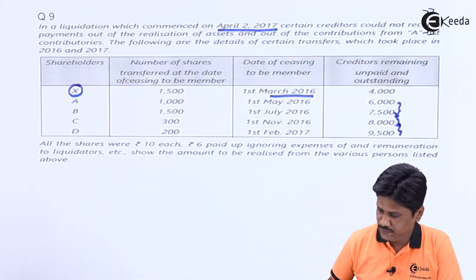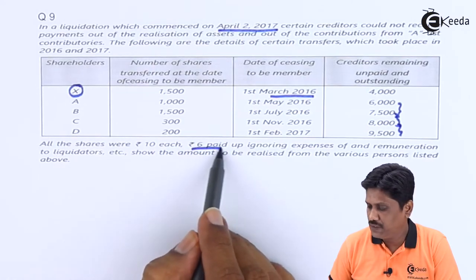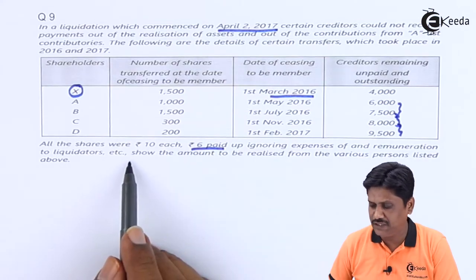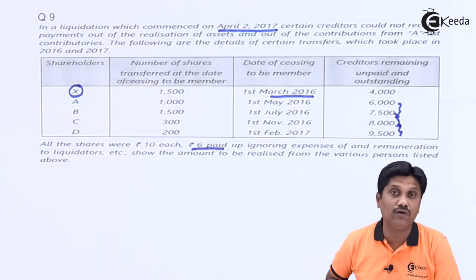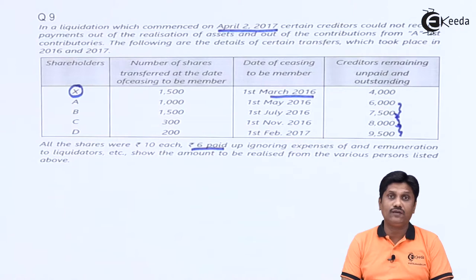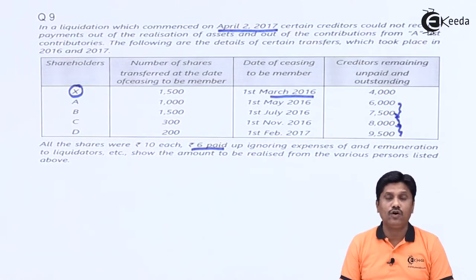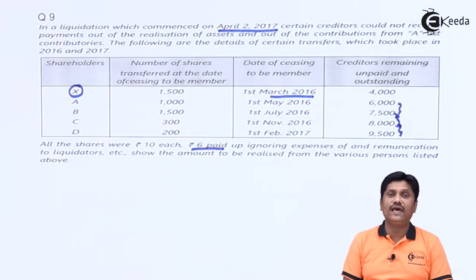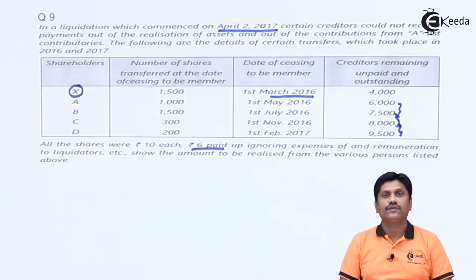Let us see what is given further: all the shares were Rs. 10 each and Rs. 6 paid up, meaning the maximum call possible on each share is Rs. 4. Ignoring expenses and remuneration to the liquidator, we need to show the amount to be realized from the various persons listed. Remember: whenever you transfer shares, on that date whatever liability exists you are responsible for; after you transfer, any increase in liability is not your responsibility. If there are more than one transferor sharing a liability, they share in the ratio of the number of shares they were holding.